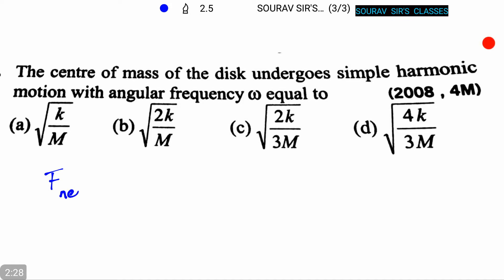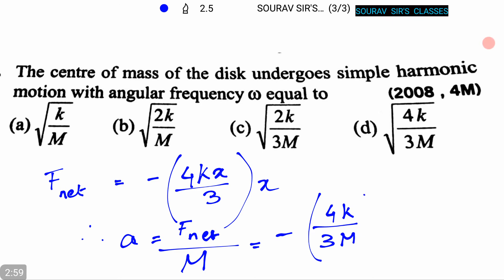F_net equals -(4kx/3). Now acceleration a equals F_net/M equals -(4k/3M)x, which is equal to -ω²x.